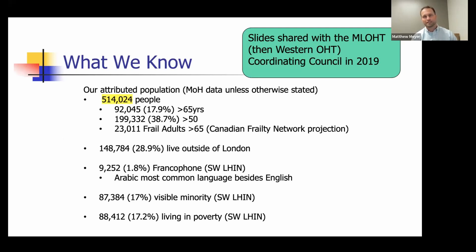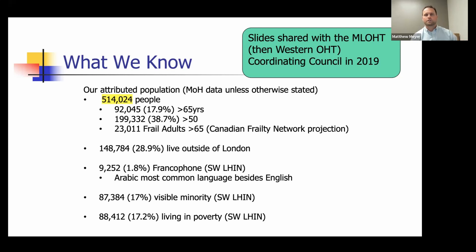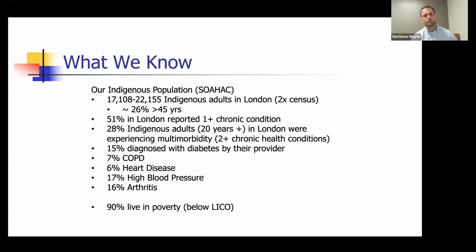These are the actual slides we used in 2019 when we were walking our Western OHT Coordinating Council through what data we had available to inform planning around Ontario Health Teams. As mentioned, in the early days we dove heavily into the Ministry of Health data provided to us. We were fortunate — we had 514,024 people to support, with breakdowns on demographics: age, geography, urban versus rural, language, and visible minorities.